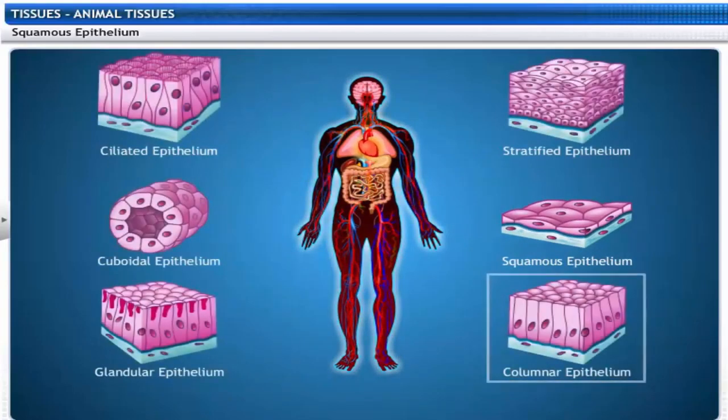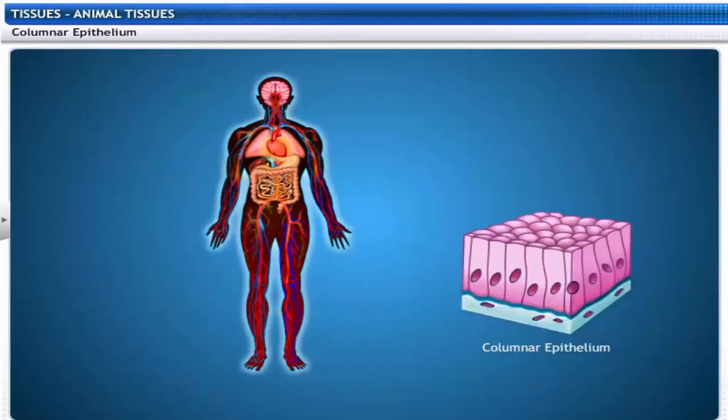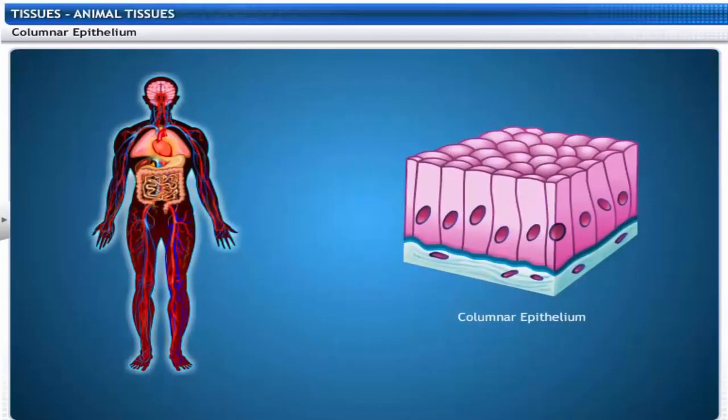These pillar-like cells are called columnar epithelium. Columnar epithelial cells are cylindrical. They are found in the lining of the stomach and intestines and facilitate the movement of nutrients across the epithelial barrier.